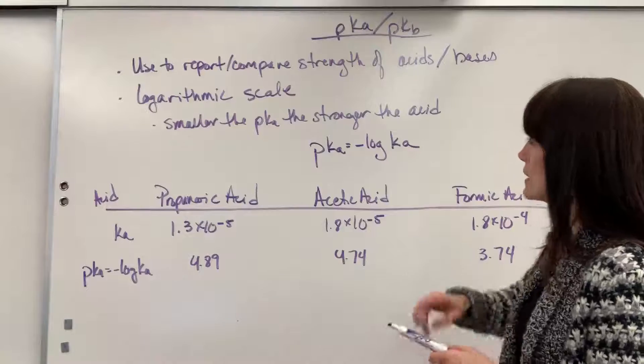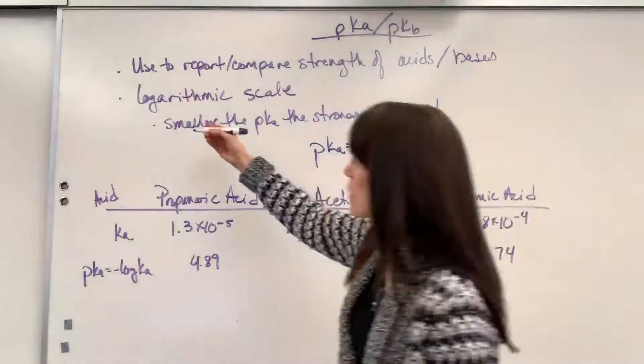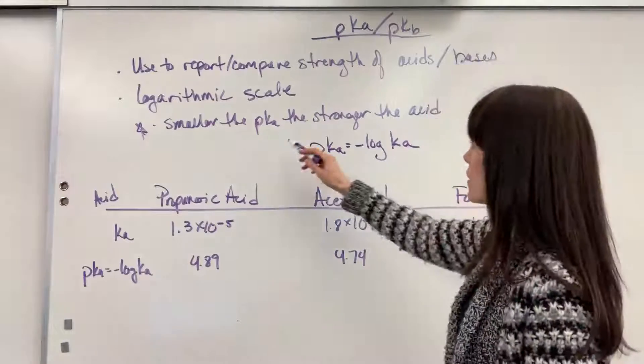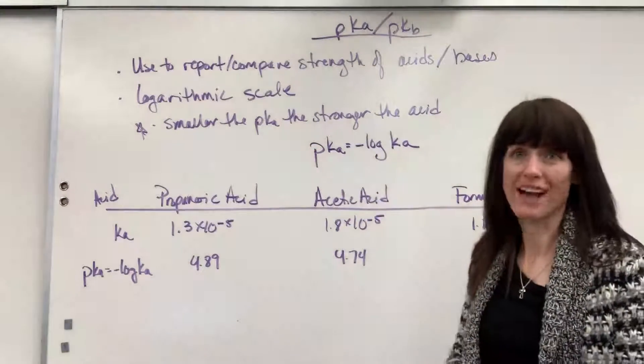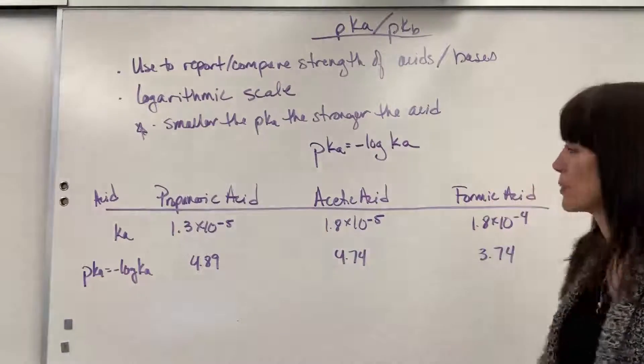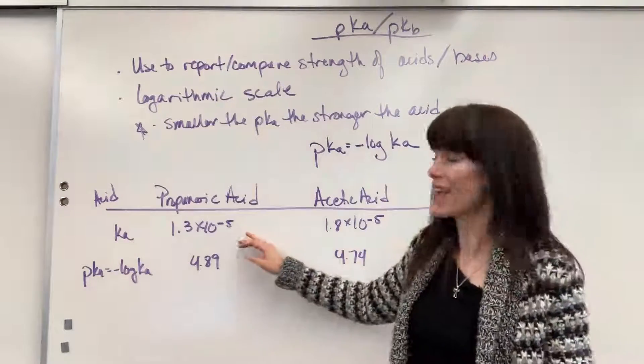So really, really big takeaway, I put a star on this, I said it once, definitely worth repeating. The smaller the pKa, the stronger the acid. So I have three examples of acids here for you. There's propanoic acid, acetic acid, and formic acid. Here are their KAs.